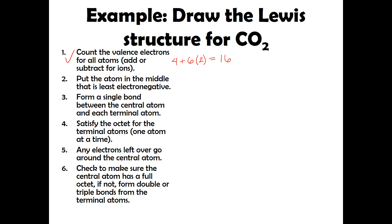Step two: put the atom in the middle that is least electronegative. Electronegativity increases as you go to the right — oxygen is more right than carbon, so carbon has to go in the middle. And a little trick: carbons always go in the middle, no matter what. We're going to attach those oxygens around it. Then step three: form a single bond between the central atom and each terminal atom. So I'm going to put a bond here and a bond here. Right now I have a total of four electrons.